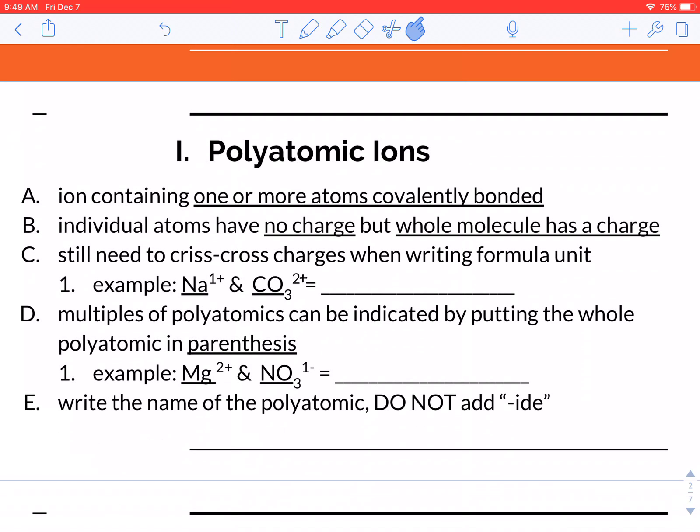But basically, polyatomic ions, if you think about that word, poly means many, and so there's many atoms within one ion. So instead of just like Na1+, like sodium with a positive charge, you can have something a little bit more complicated.